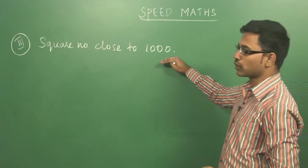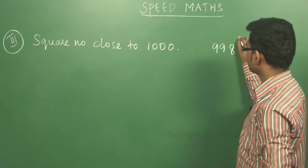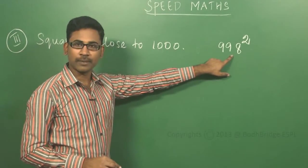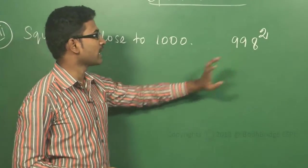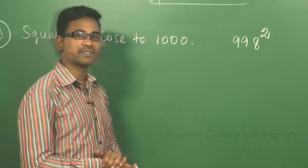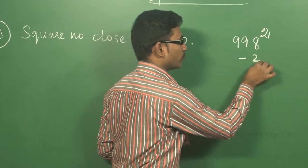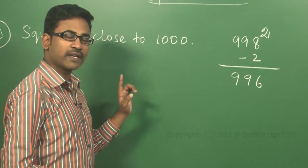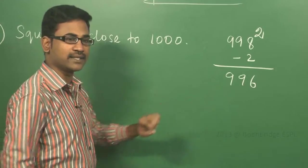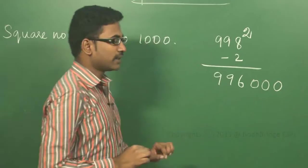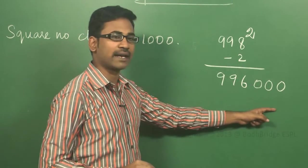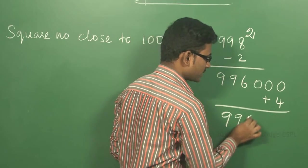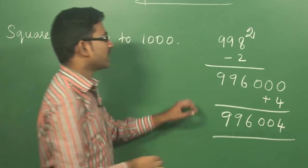The next topic is square numbers close to 1000. If there is a number like 998 squared, it is very difficult to multiply 998 into 998 directly. In quicker math, you use the same procedure as for numbers close to 100. How much is it less than 1000? It is minus 2. So 998 minus 2 equals 996. Since it is close to 1000, add three zeros. Square the difference: minus 2 squared is plus 4. So 996004 is the answer for 998 squared.